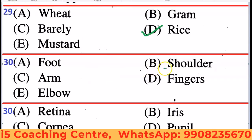Next: Foot, Shoulder, Arm, Fingers, Elbow. All others except Foot are related to the arm — Shoulder, Arm, Fingers, and Elbow are all parts related to the arm. Foot is not related to the arm. So Foot is the odd one out.